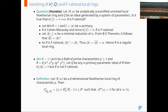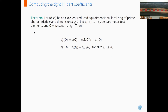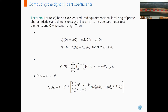Now we have the definition of the tight closure of zero in the top local cohomology module. Let R, M be a D-dimensional Noetherian local ring of characteristic P. The tight closure of zero in H_D^M(R) is given by the collection of all elements in H_D^M(R) such that there exists C in R-zero with the property that C times the e-th Frobenius action on eta vanishes for large values of e. We were then able to compute the tight Hilbert coefficients in this case. Let R, M be an excellent reduced equidimensional local ring of prime characteristic P and dimension at least 2, with x1, ..., xg parameter test elements and Q the ideal generated by them. Then we have explicit expressions for the tight Hilbert coefficients in terms of the usual Hilbert coefficients, and also in terms of the lengths of local cohomology modules and the length of the tight closure of zero in H_D^M(R).